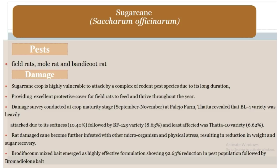Sugarcane crop is highly vulnerable to attack by a complex of rodent pest species due to its long duration, providing excellent protective cover for field rats to feed and thrive throughout the year. A damage survey conducted at crop maturity stage (September–November) at the plagio farm showed that the BL4 variety was heavily attacked due to its softness at 10.40%, followed by BF129 variety at 8.63%, and least affected was the variety at 6.62%. Rat damage can become further infested with other microorganisms and physical stress, resulting in reduction in weight and sugar recovery.